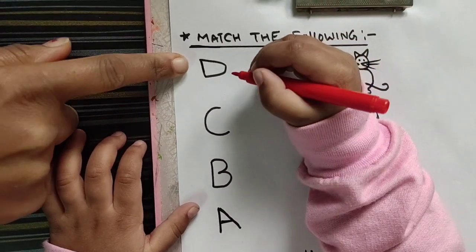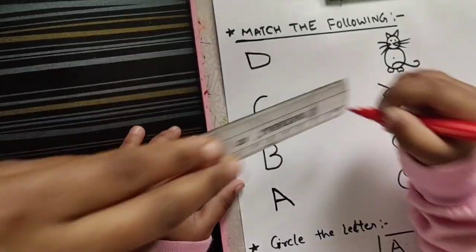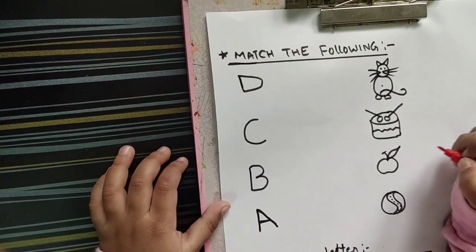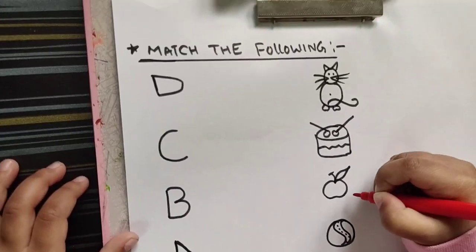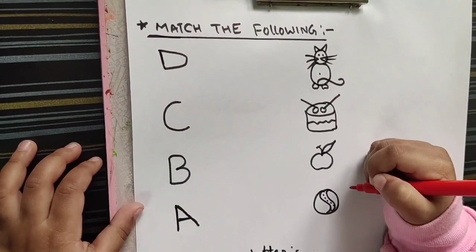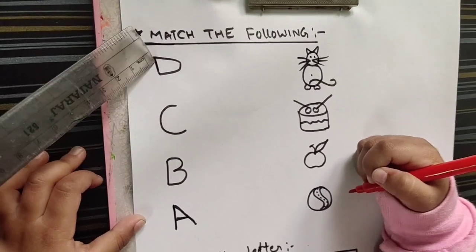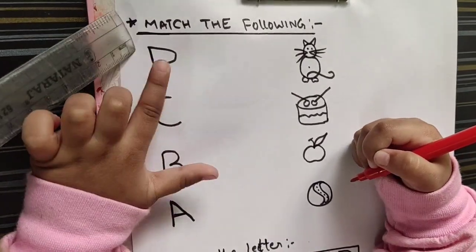Which letter is this? D. This is? D. What is D for here? Which picture will you match? D for? Which picture will you match? I don't know. D for? D for?